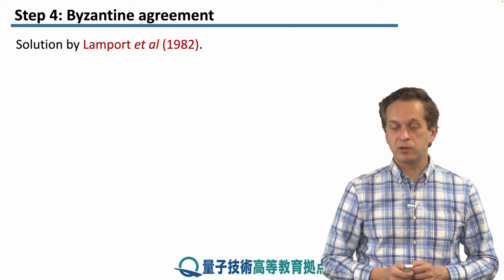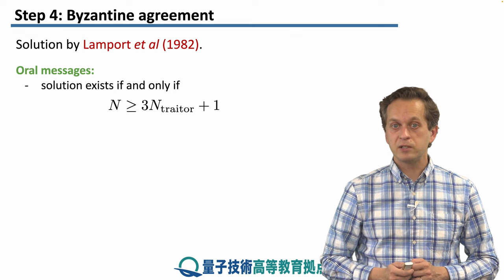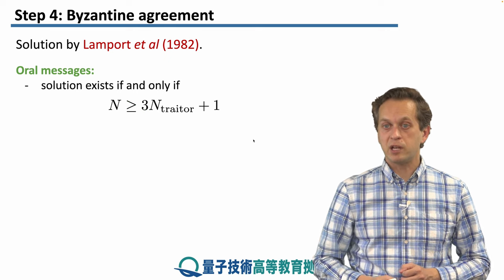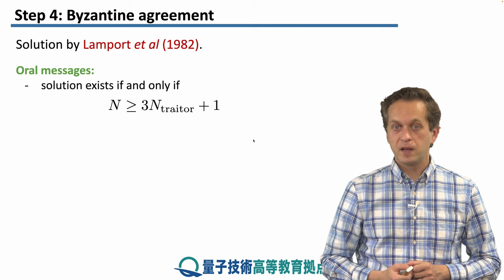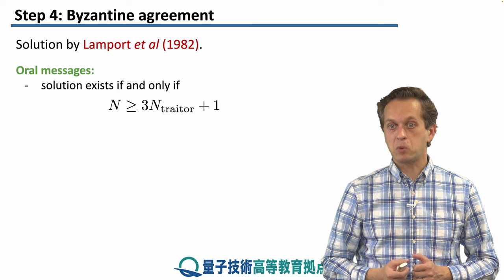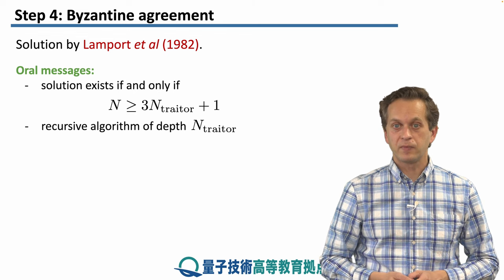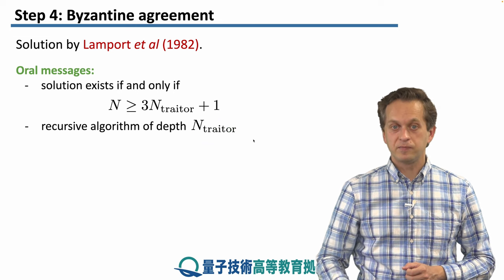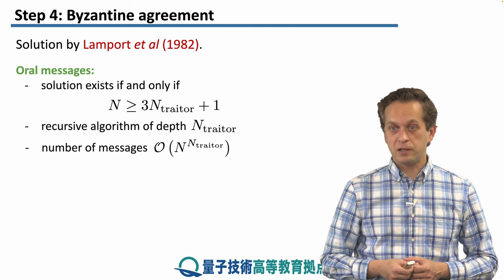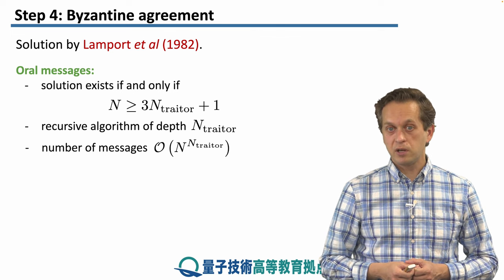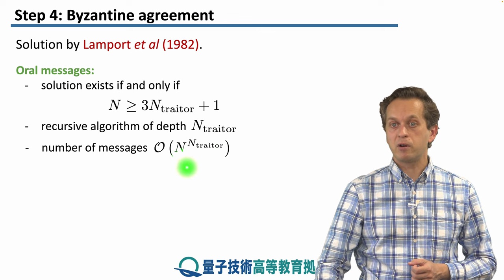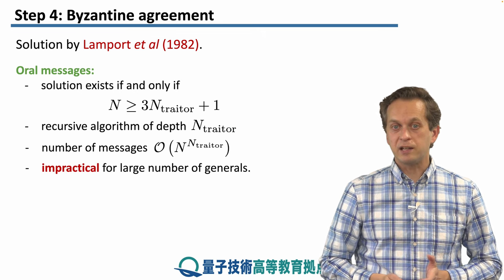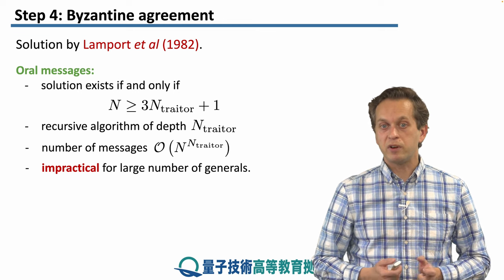The original solution of Lamport from 1982 for oral messages required the total number of generals to be larger than three times the number of traitor generals plus one. Only then were the loyal generals able to come up with a common battle plan. The algorithm was recursive and its depth depended linearly on the number of traitors. The number of messages exchanged scaled as n to the power of the number of traitor generals, n. You can see from this scaling that the solution, even though correct, wasn't very practical.